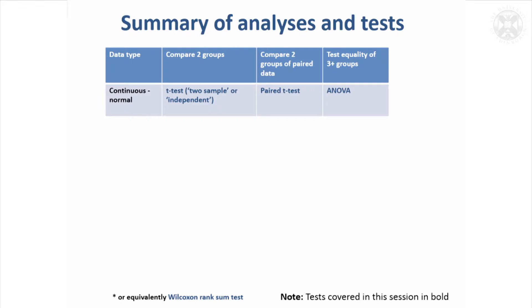For continuous data, if we can assume that it's normally distributed, to compare two groups we would do a t-test — either a two-sample, independent, or unpaired t-test. If the groups were paired then there's the paired t-test, or one-sample t-test.